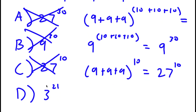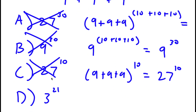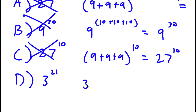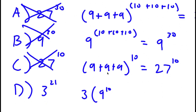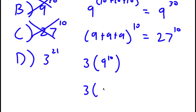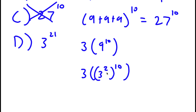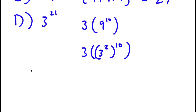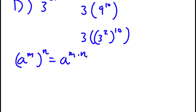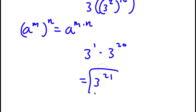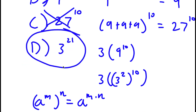Finally, for answer choice D, you write this as 3 times 9 to the power of 10, since 9 to the power of 10 appears three times. Now, 9 to the power of 10 is the same as 3 to the power of 2 to the power of 10. Using A to the power of M to the power of N equals A to the power of M times N, that's 3 to the power of 20. So now I have 3 to the power of 1 times 3 to the power of 20, which equals 3 to the power of 21. This is the correct answer, so D is right.